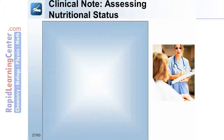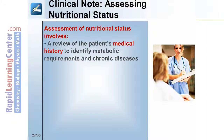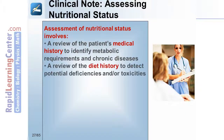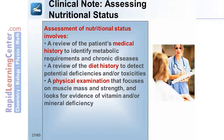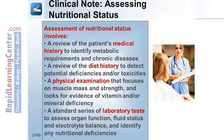Assessment of a patient's nutritional status involves a review of the patient's medical history to identify metabolic requirements and chronic diseases, a review of the diet history to detect potential deficiencies and/or toxicities, a physical examination focusing on muscle mass and strength and evidence of vitamin and/or mineral deficiency, and a standard series of laboratory tests to assess organ function, fluid status and electrolyte balance, and identify any nutritional deficiencies.